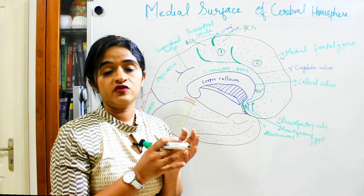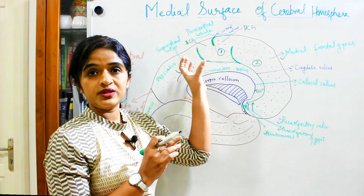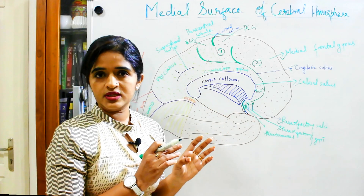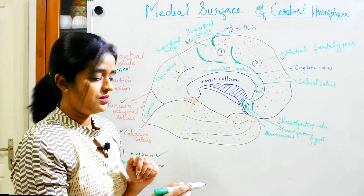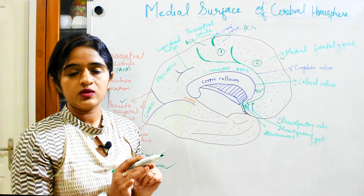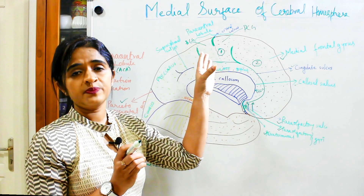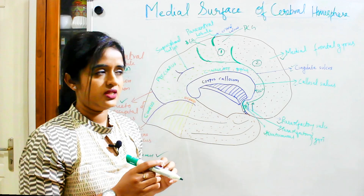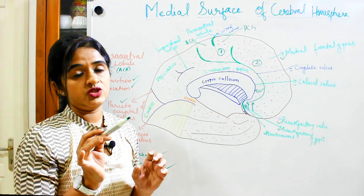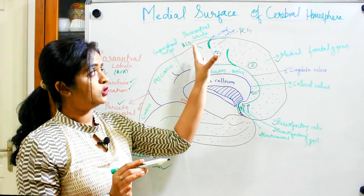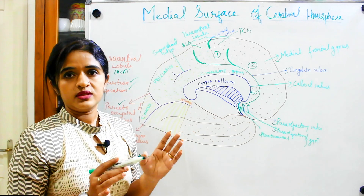The control centers for defecation and micturition are located in the paracentral lobule. Regarding blood supply, this region is supplied by the anterior cerebral artery. If there is any occlusion in the anterior cerebral artery, the patient will present with lower limb weakness along with urinary incontinence. These are the striking features of a lesion in the paracentral lobule. You can draw a diagram and mention its function, blood supply, and the applied aspect when it is asked as a short note.